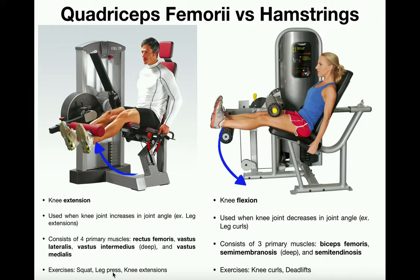Movements that involve the quadriceps femoris include knee extension, the leg press, and squats. When you do the upward phase of a squat or push the platform away during a leg press, that motion actually increases the angle of the knee joint. For that reason, these are two good exercises to strengthen the quadriceps muscles.